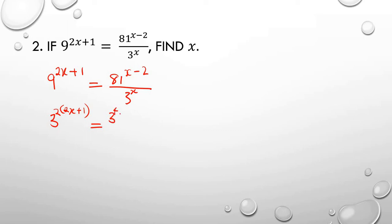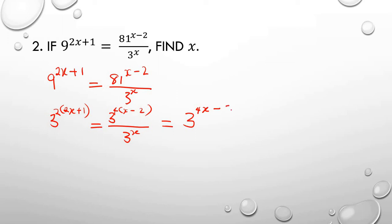81 is 3 raised to power 4, multiplied by the power x minus 2, and then we have 3 raised to power x. Let's open the bracket on the right-hand side: I have 4x — multiply out — and then minus 8. I have to multiply by 4, so this gives me 4x minus 8.